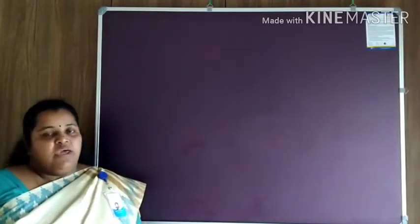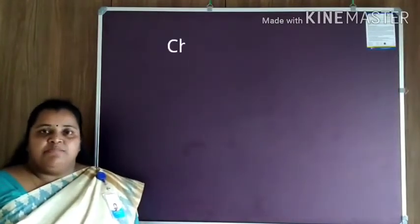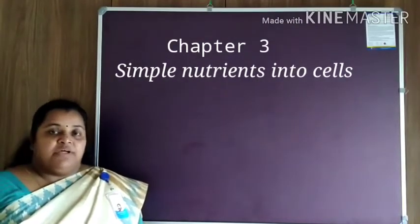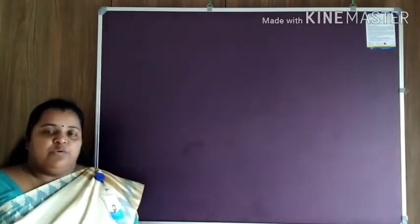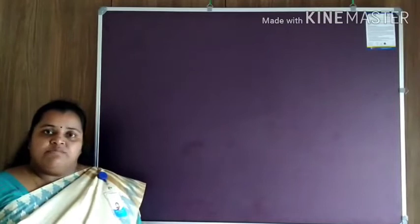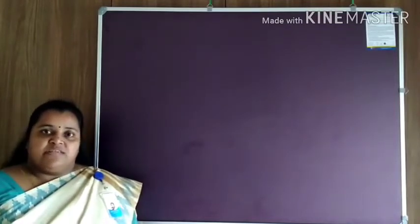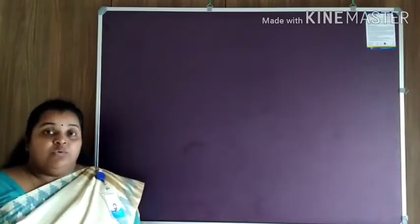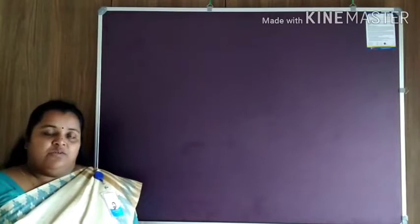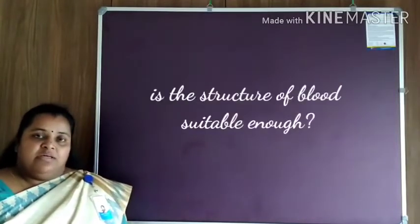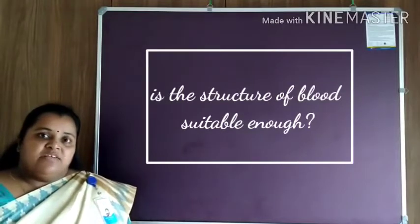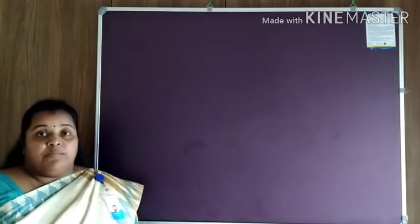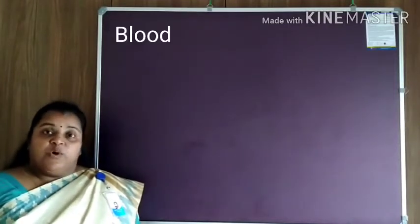Hello everyone, we are into the third chapter: simple nutrients into cells. In the last chapter, we learnt that the simple nutrients formed after digestion are absorbed by the blood vessels and the lymph vessels in the small intestine. How do the simple nutrients reach the cell through blood and lymph? Is the structure of blood suitable to carry the substances? To know more about this, we have to learn about the components of blood.